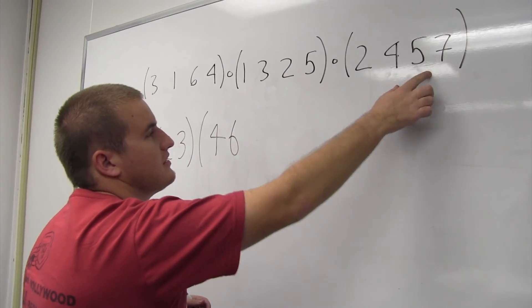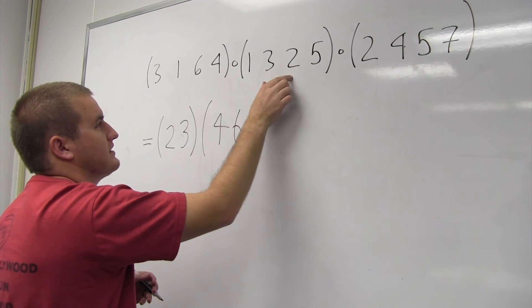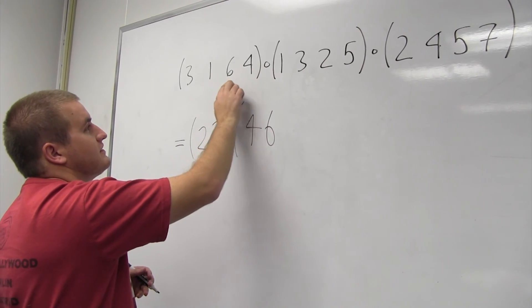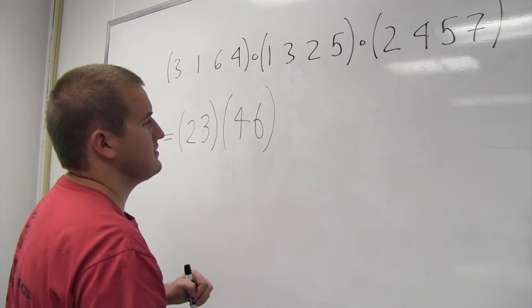We've got no 6 here, so 6 is fixed, and then the 6 is fixed here too. But here, the 6 ends up going to 4, so it goes right back to 4. And those don't change at all.